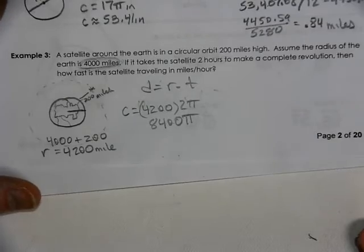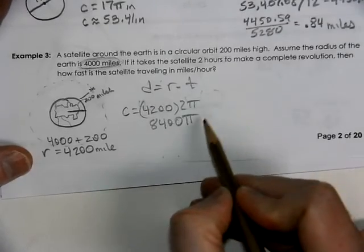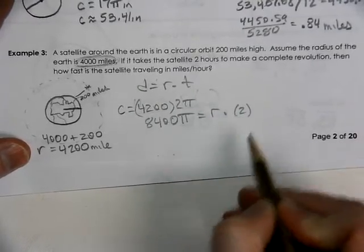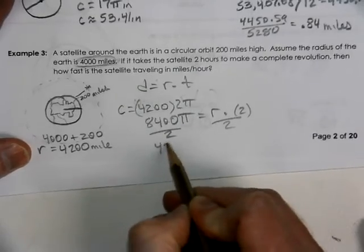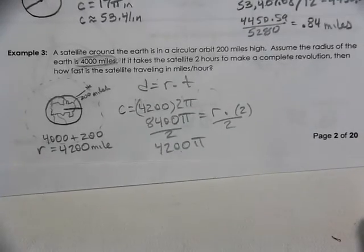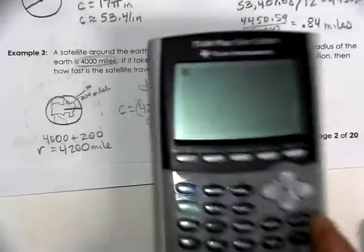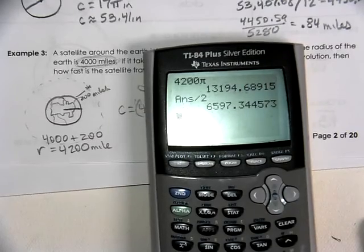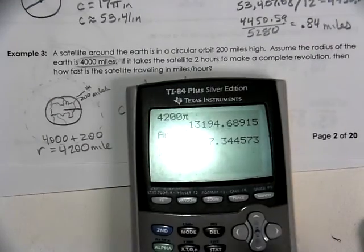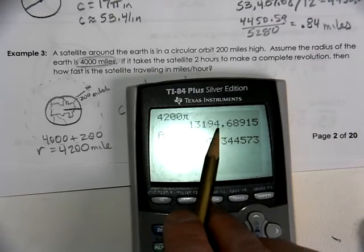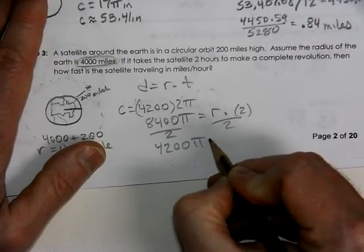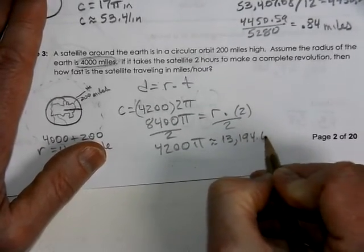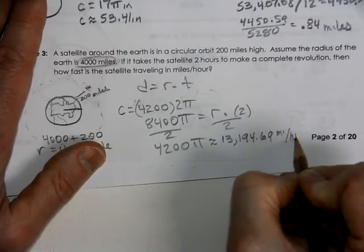Now using distance equals rate times time: 8,400π = rate × 2 hours. Dividing by 2 gives a rate of 4,200π. Calculating that out gives approximately 13,194.69 miles per hour. That's how fast the satellite is traveling.